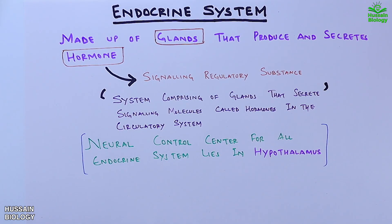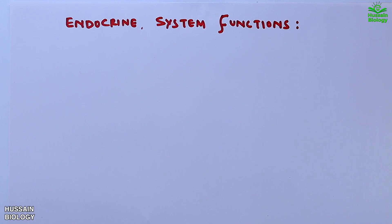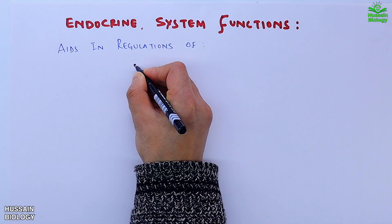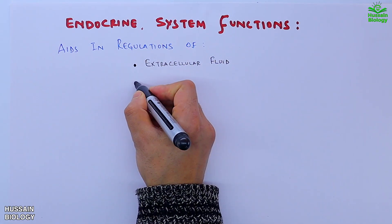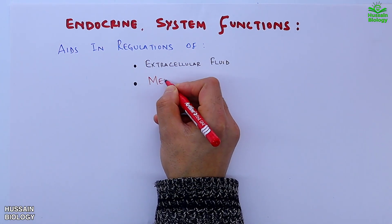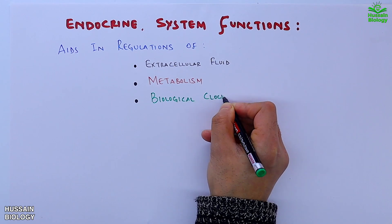Now let's get to the endocrine system functions. First, it aids in the regulation of extracellular fluid, mostly by the adrenal glands. Second is metabolism regulation by hormones. Third is the regulation of biological clocks.